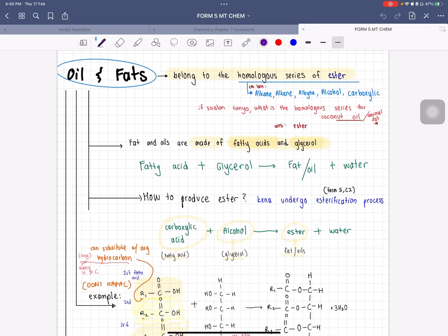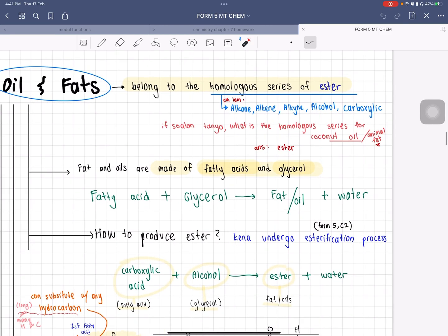Let us know your feedback in the comments below. Okay, let's start off with Chapter 5 from Form 5 Chemistry: oils and fats. As we all know, oils and fat belong to the homologous series of ester. So if the question asks you what is the homologous series for coconut oil or even animal fat, you will just answer it's ester because coconut oil is still an oil and animal fat is still fat.